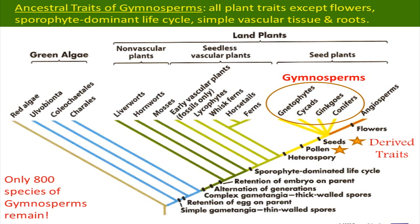Only 800 species of gymnosperms remain, and they fall into four phyla we're going to go over today: the gnetophytes, cycads, ginkgos, and conifers. Ginkgos are restricted to one species, Ginkgo biloba.